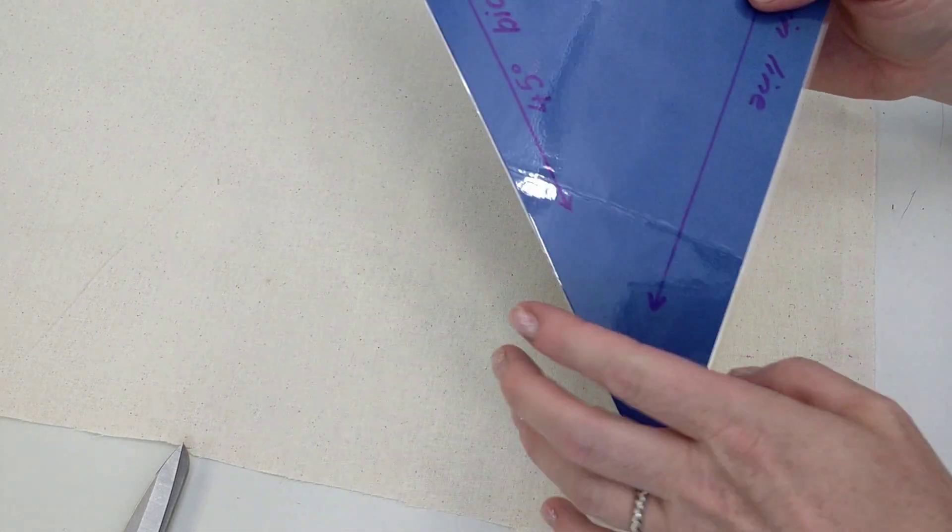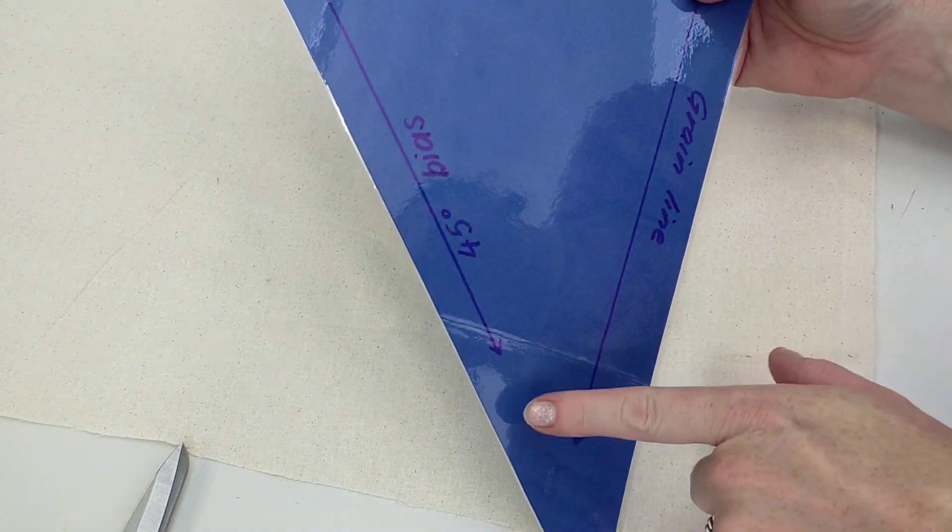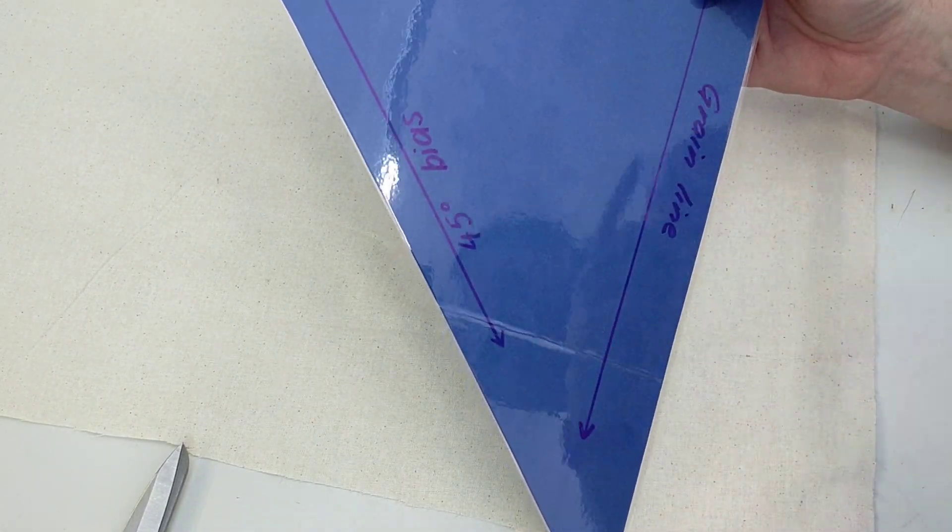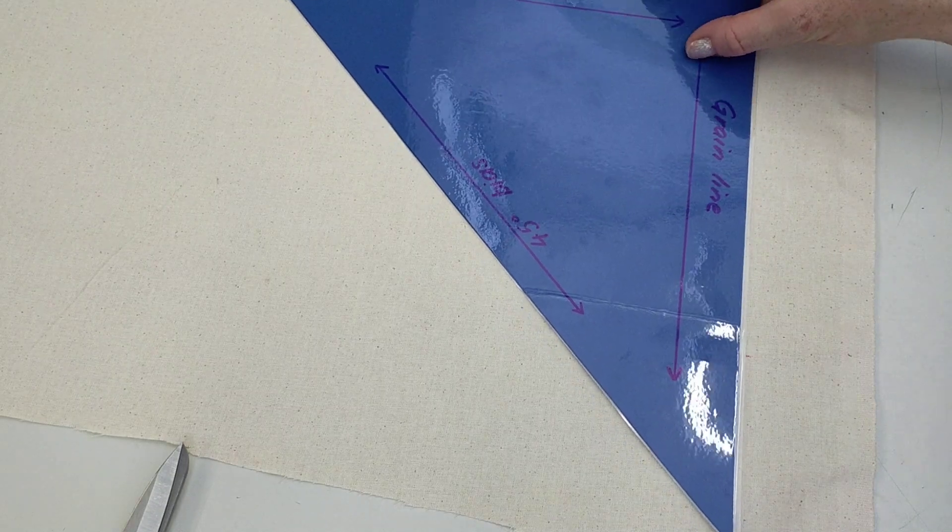Okay, so for this video we're going to look at making a strap which is cut on the bias. Now, what the bias is, it's a 45-degree angle to the grain line. So I've got this template here which I can use to work out that 45-degree angle when I cut out my fabric.